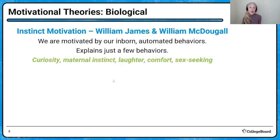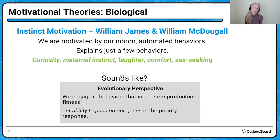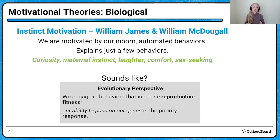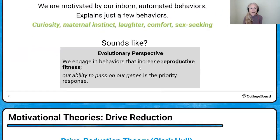These are all behaviors that will sound a lot like the evolutionary perspective that Dr. Svolk went over in session one. These are behaviors that basically increase our reproductive fitness — our ability to pass on our genes — which is our priority response according to evolutionary models.